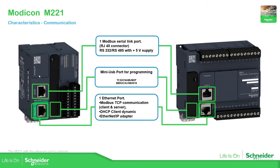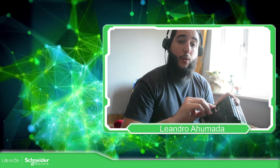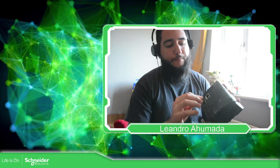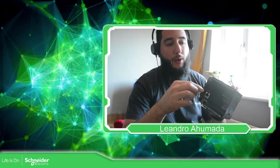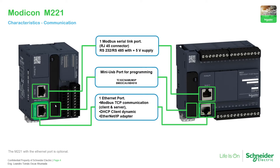Both the book and standard versions come with Modbus serial, but in the particular case of the book version, if you don't have the Ethernet port, it comes with two Modbus serial ports — that is one difference between the two models. There is also a mini USB communication port; you can see it at the bottom of the PLC once you remove the cover, which is used to connect to the PLC.